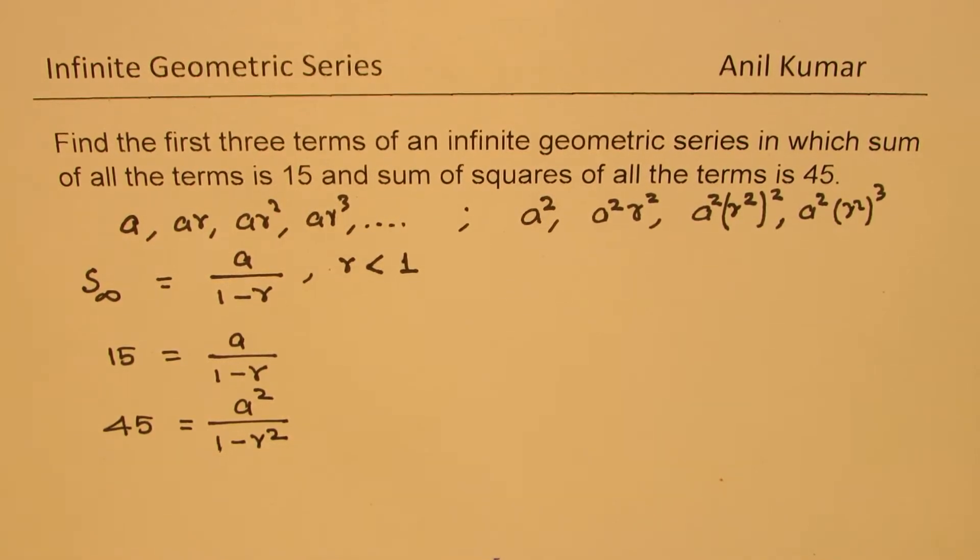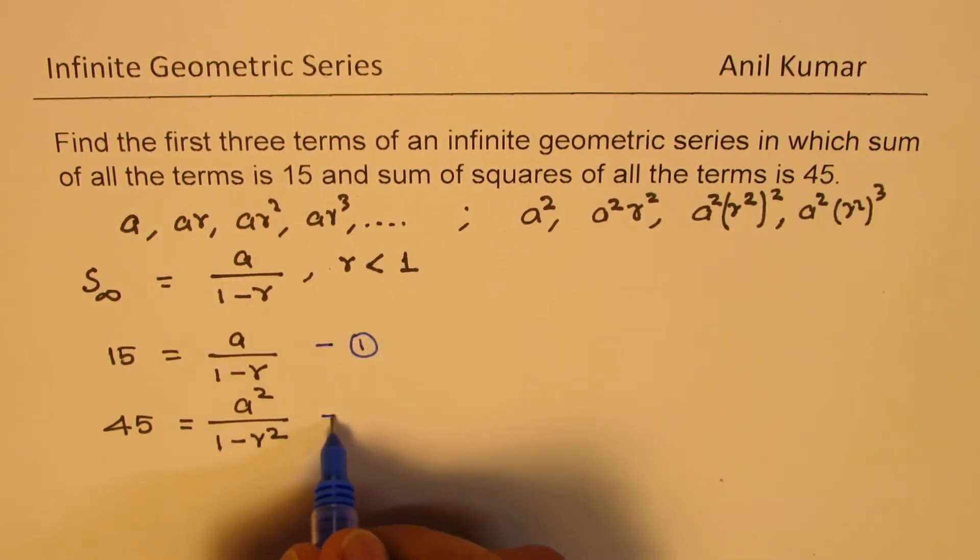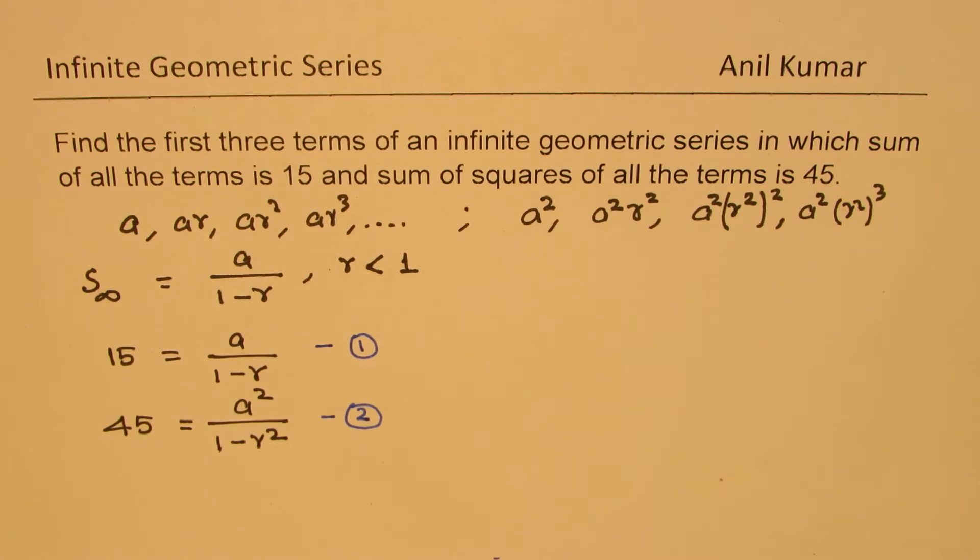So we get two equations to work with. Now, since we have two equations and two variables, it should not be difficult to find the answer. So what we can do is factor 1 minus R square.